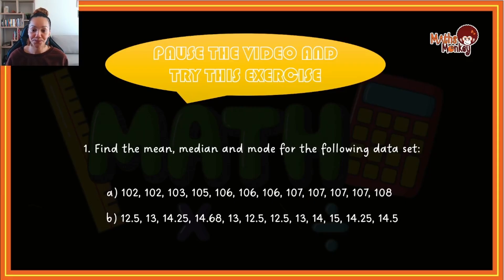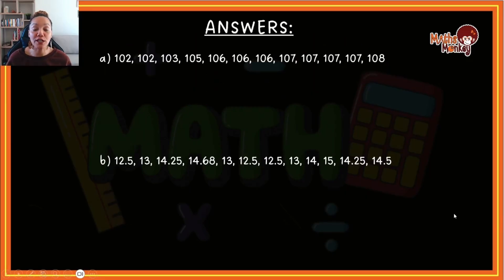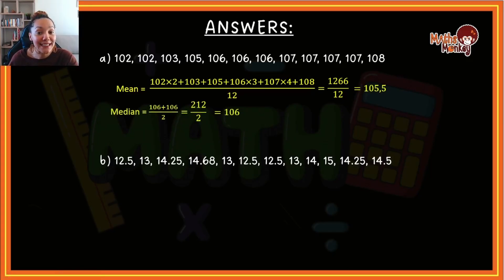For your first one, our mean is 105.5. The median, the middle numbers, was 106 and it was two of them, so you add them together, divide by two, and you get 106. The mode, the number that appeared the most in this data set, was 107.